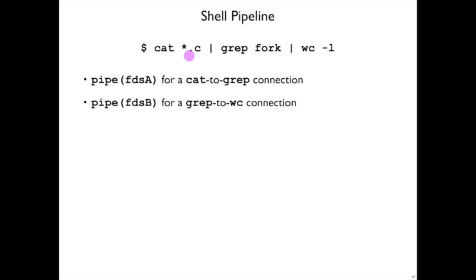So one pipe to communicate output of cat to input of grep, and another one to communicate output of grep to the input of wc.